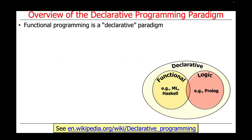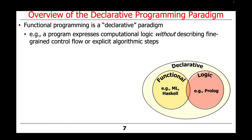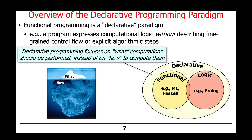Functional programming is a so-called declarative paradigm. What that means is that a program expresses computational logic without describing fine-grained control flow or often explicit algorithmic steps. Declarative programming therefore focuses much more on what computation should be performed instead of on how to compute them. In contrast, imperative programming focuses a lot more on how the steps involved — for example, to mutate or change a program's state.